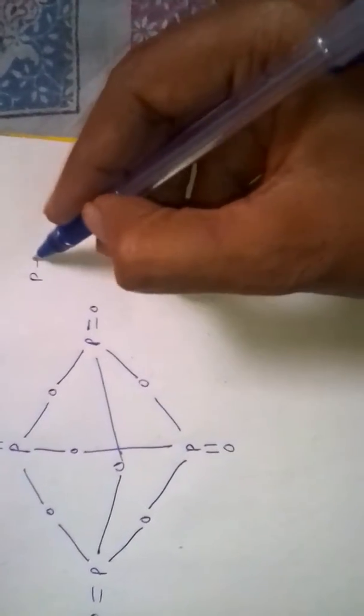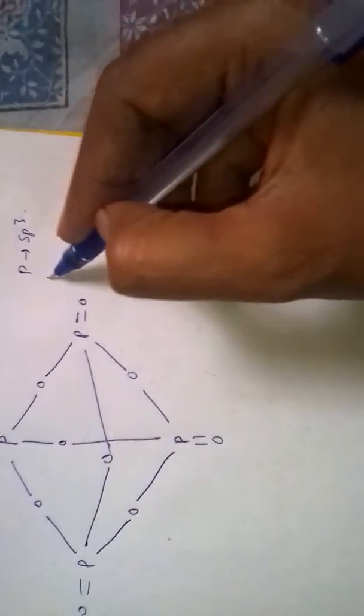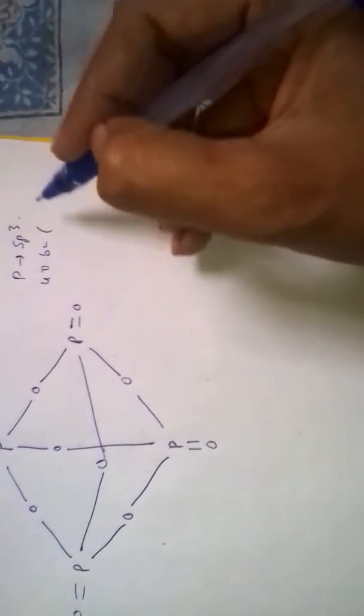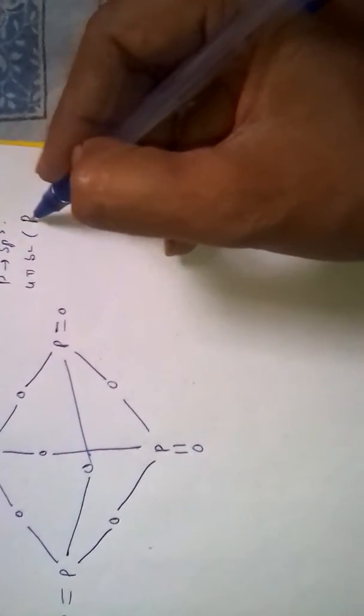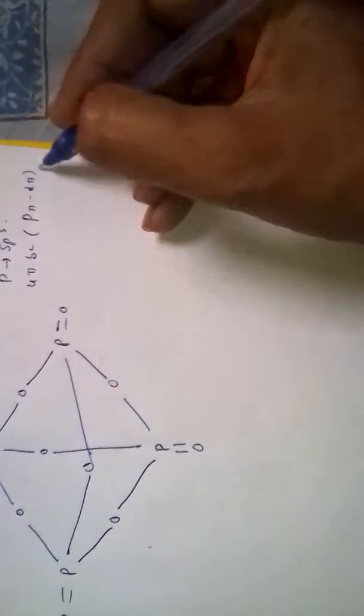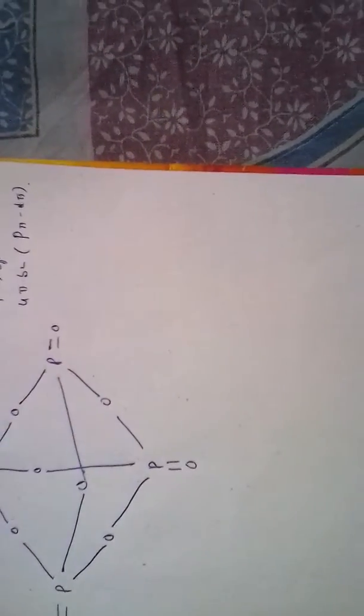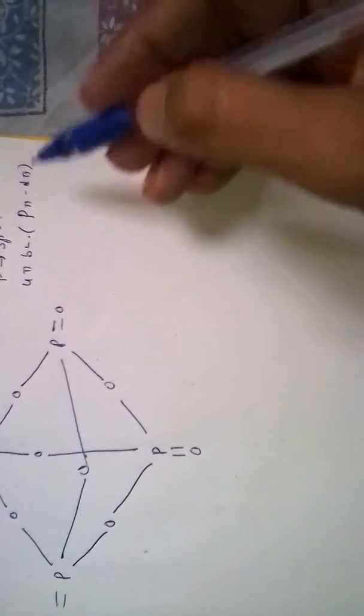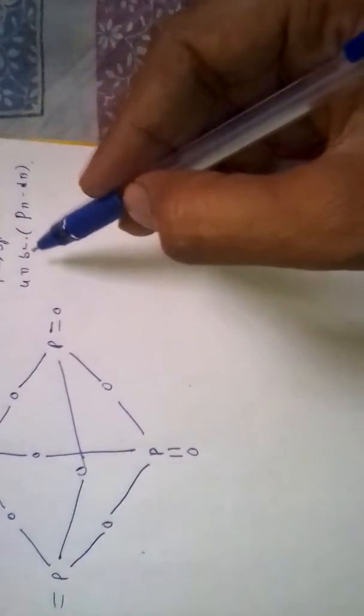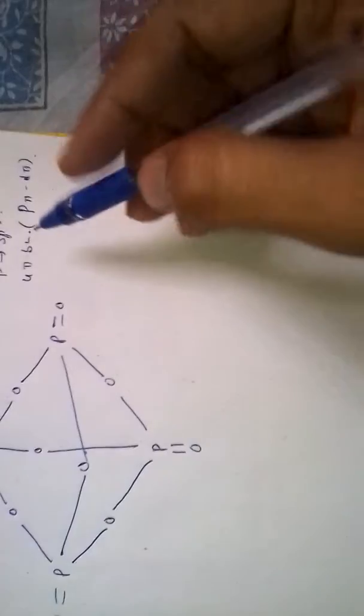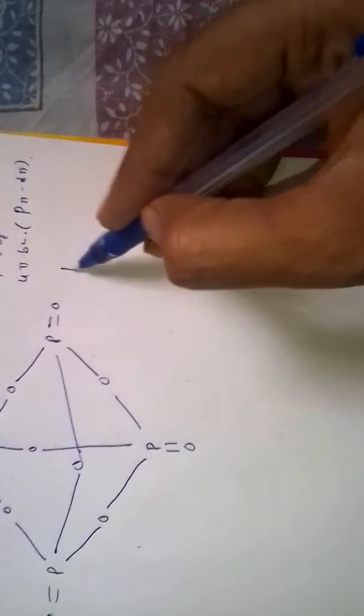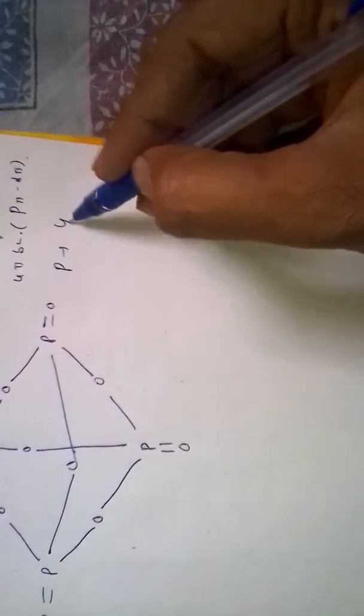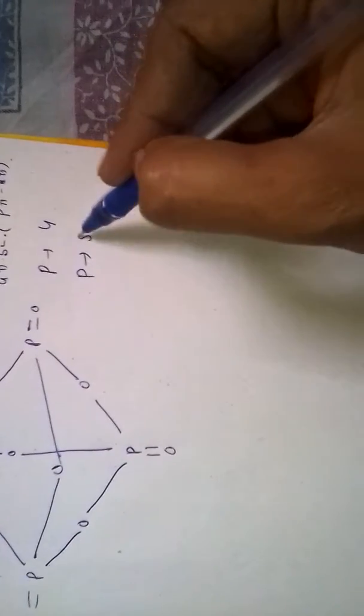Here phosphorus undergoes sp3 hybridization. Four pi bonds are formed. All these pi bonds are P-d pi bonds because the electron which forms pi bonds is in the d orbital in all the phosphorus atoms. Each phosphorus is surrounded by 4 oxygens. Phosphorus valency is equal to 5.